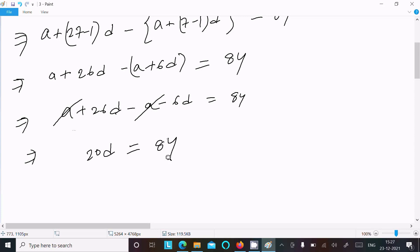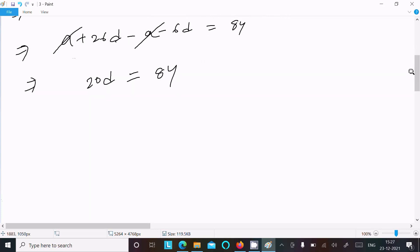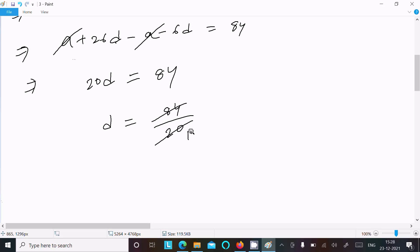So d is now 84 divided by 20. After canceling, 10 goes into this 4 times, 2 cancels to give 5, and here 21. So d is now 21 by 5.